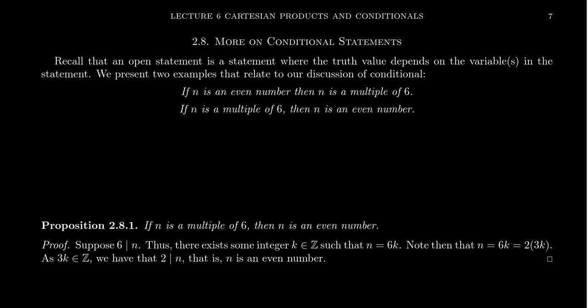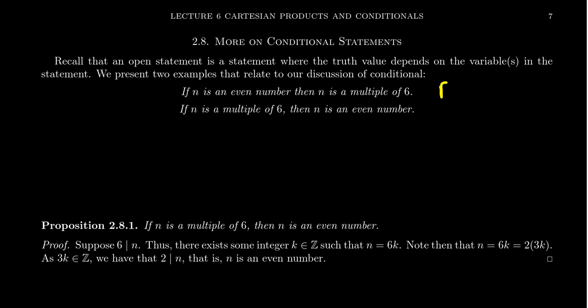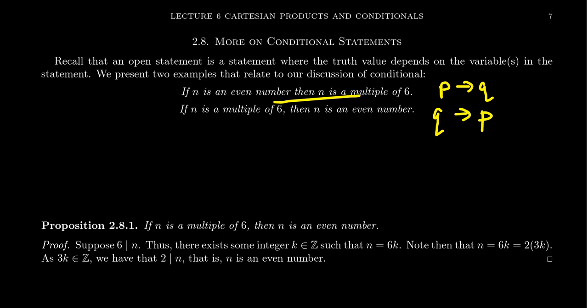How open statements relate to conditionals deserves a little attention. Taking those two primitives, we call p: 'n is an even number,' and q: 'n is a multiple of 6.' There are two ways to combine these open statements into a conditional. The first: if n is an even number, then n is a multiple of 6 — written as p implies q. The second switches them around: if n is a multiple of 6, then n is an even number — written as q implies p.